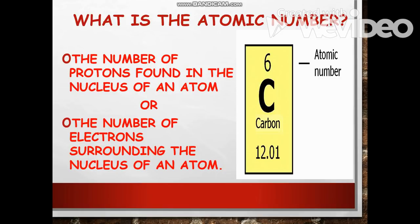What is the atomic number? The atomic number is the number of protons found in the nucleus of an atom. Remember that the number in the upper left corner is what we call the atomic number. Whatever the atomic number of an element is, that is also the number of protons in the nucleus, as well as the number of electrons surrounding the nucleus of an atom.